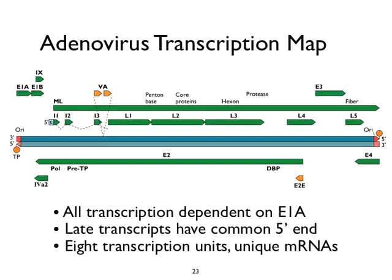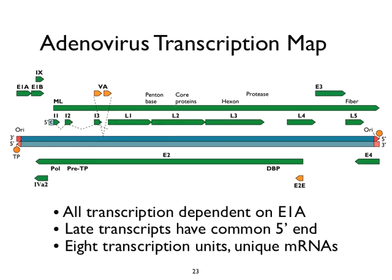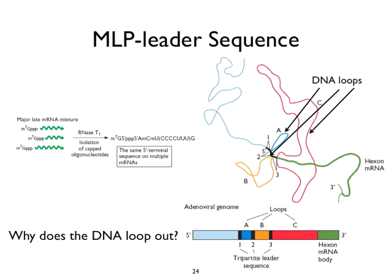The tripartite leader is an important sequence because it's used to help translate late messenger RNAs. The 3-prime end of L3 is then spliced to various acceptor sequences throughout the very large messenger RNA to generate individual RNA transcripts. How do we know this is true? If you isolated RNAs for L2, L3, hexon, or core proteins and asked what their 5-prime end looks like, they would all look the same — this undecanucleotide was conserved. When they looked at the sequence of adenovirus, these sequences were incorporated within the tripartite leader.